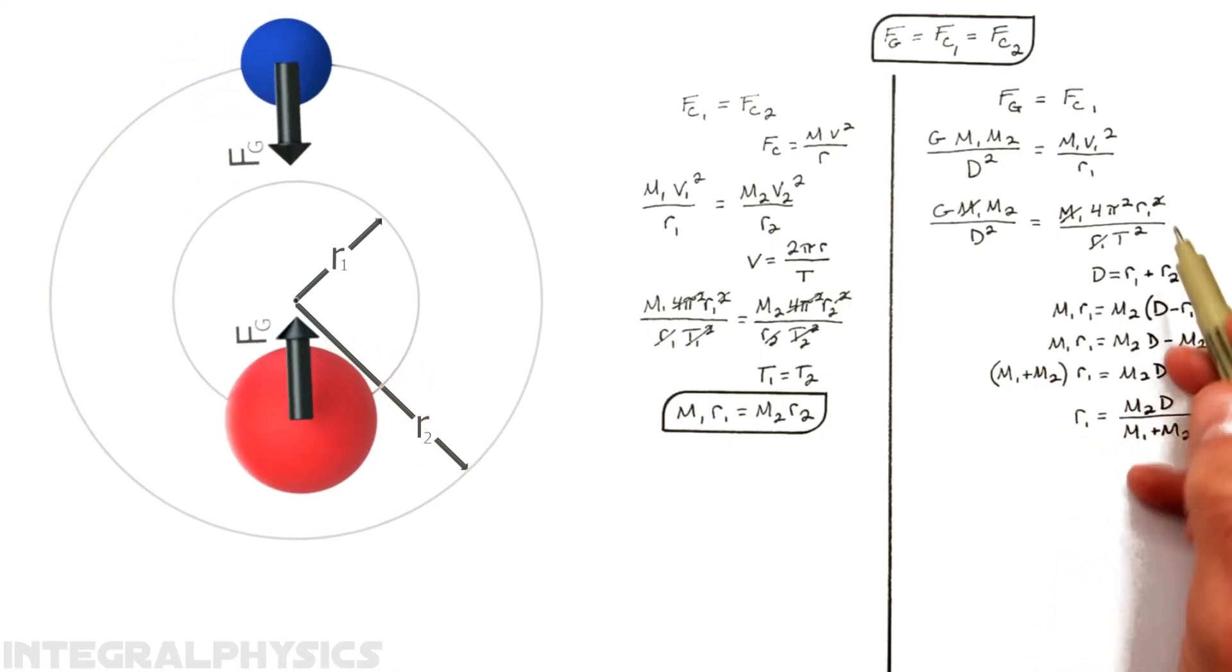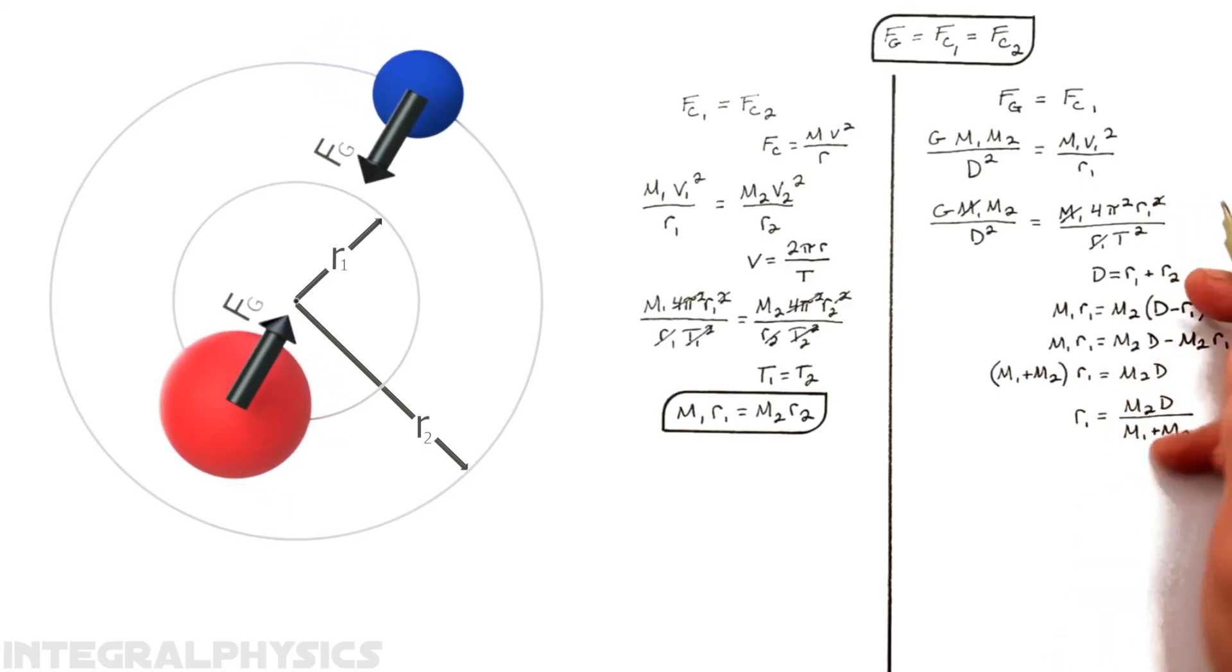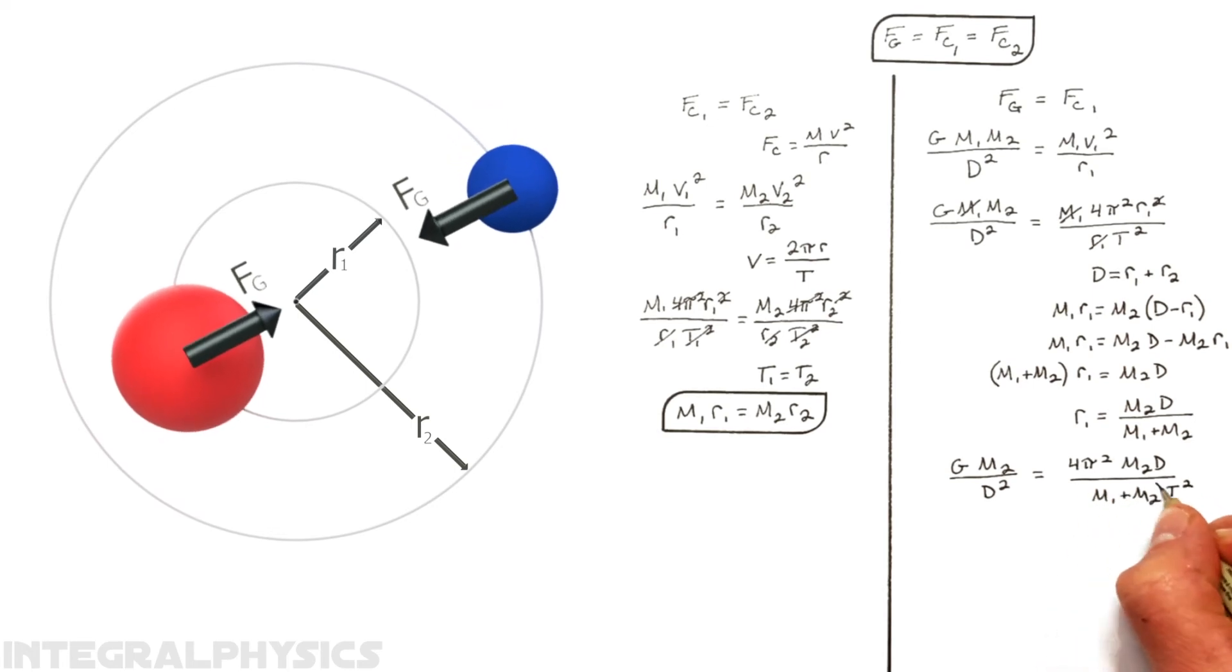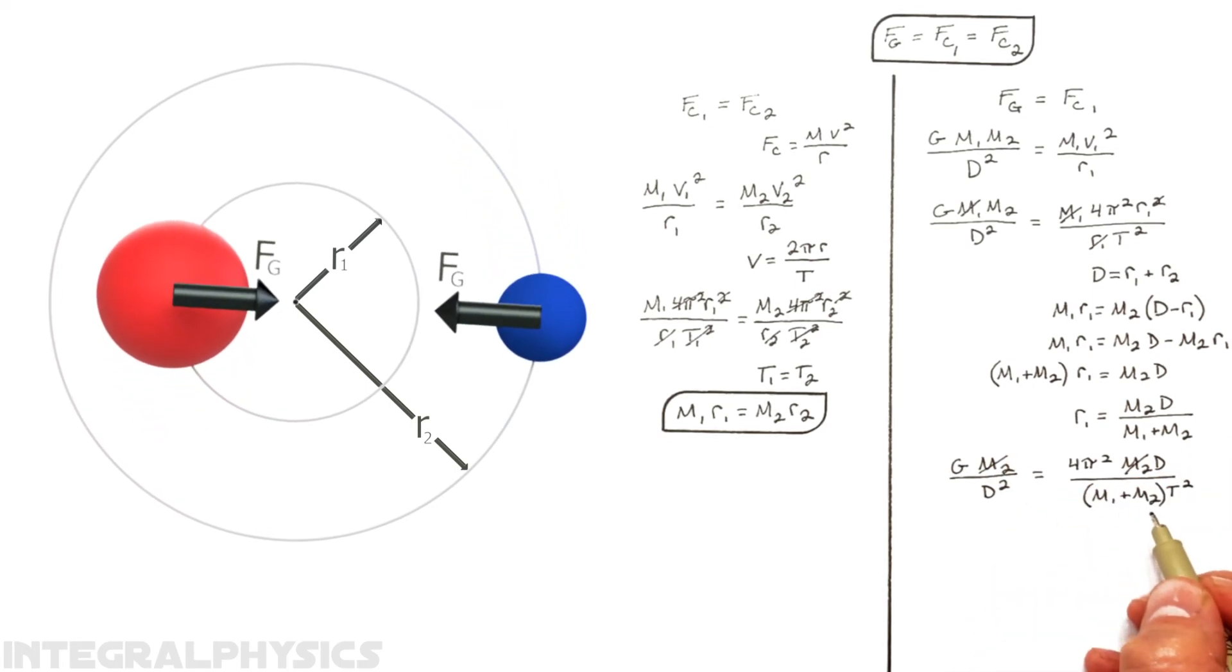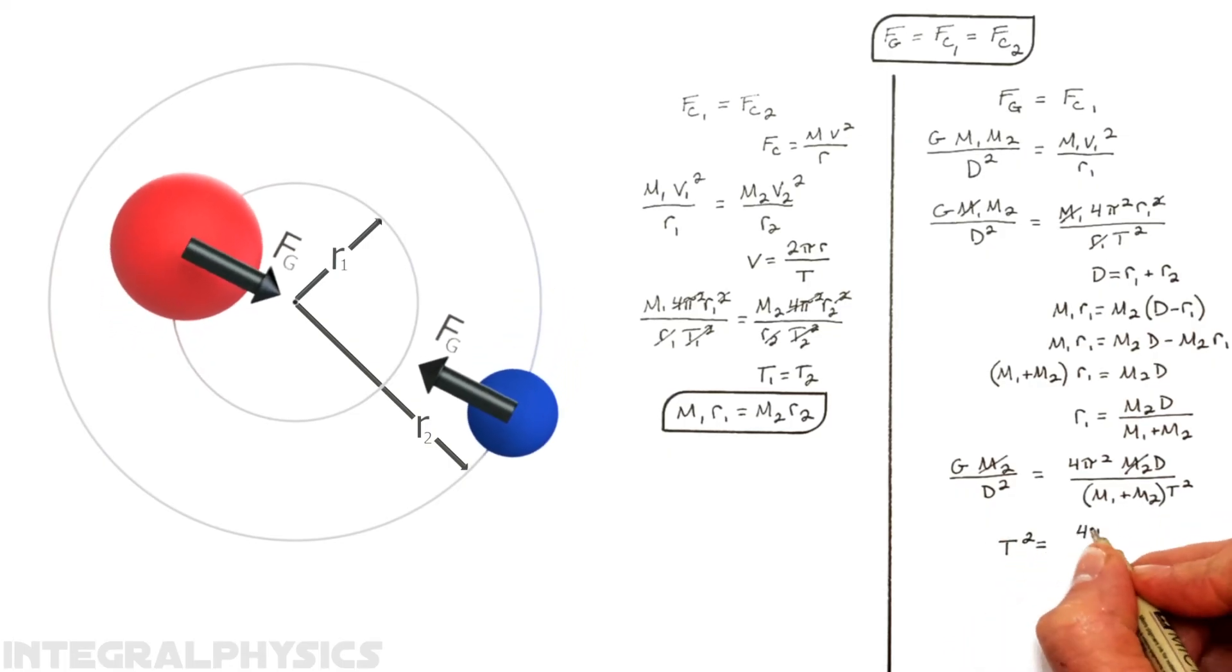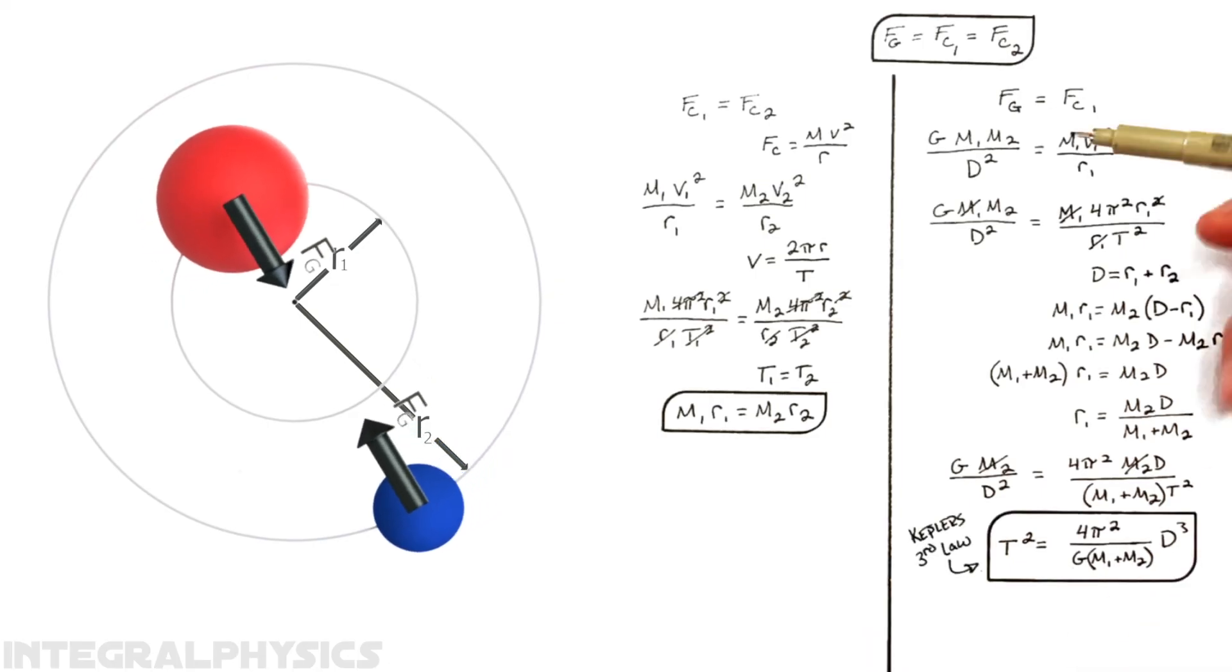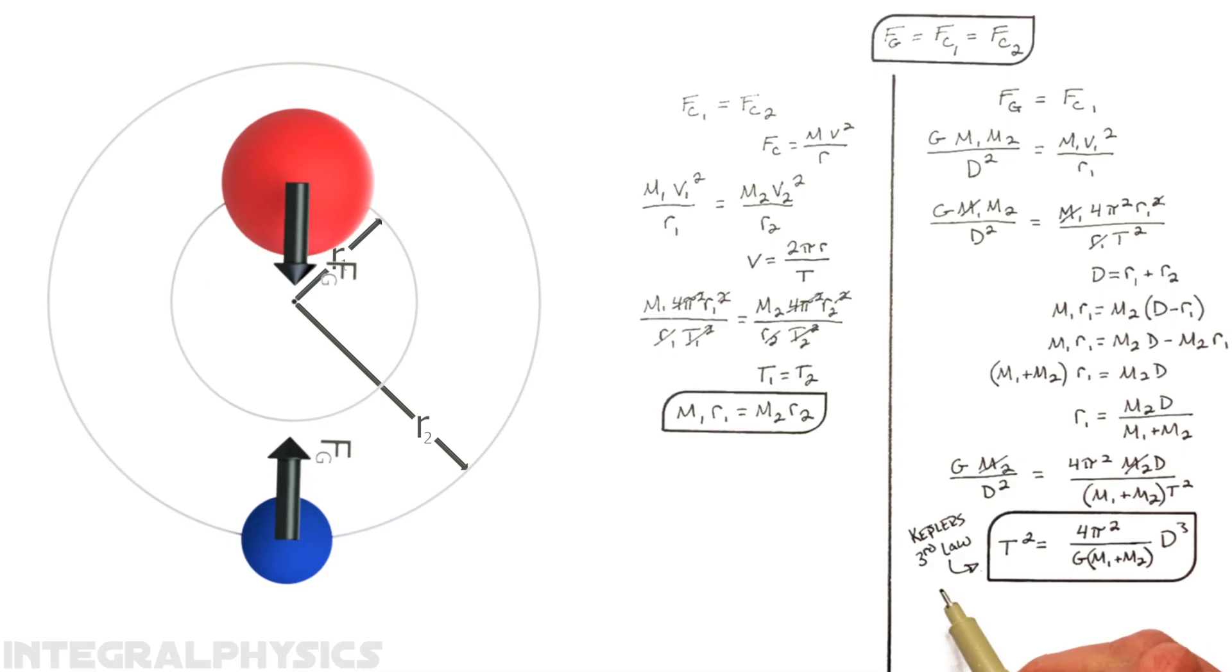And remember, the whole point of this was to try to get rid of this r1 up here. So, I'm going to sub this term in right there. And you'll notice our m2 cancels out, which brings a bit of symmetry to this. And then rearranging for the period, and we get one of the most fundamental equations in all of astrophysics, Kepler's third law.